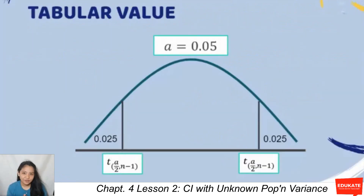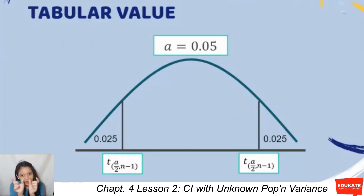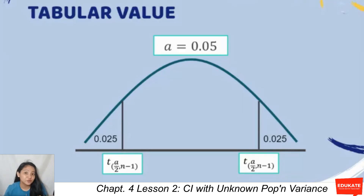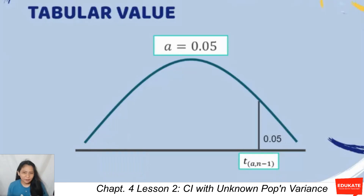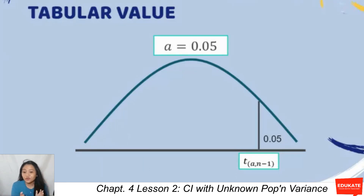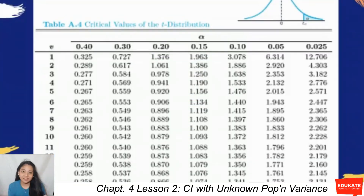For the tabular value, take alpha of 0.05 as an example. For a two-tailed test, divide by two, giving 0.025 on each side. For a one-tailed test, just retain the alpha level, so the area to the right in the right-tailed t-distribution is 0.05.